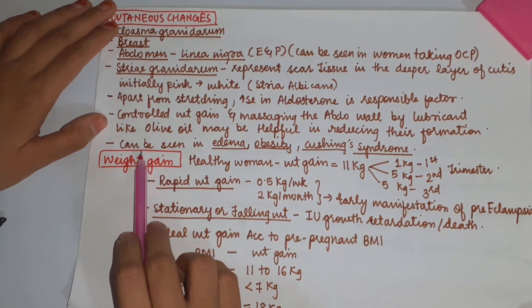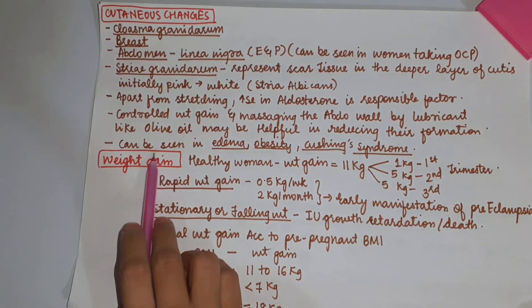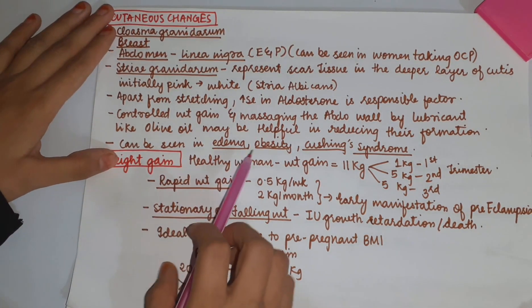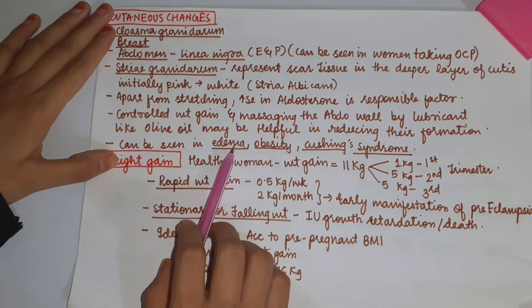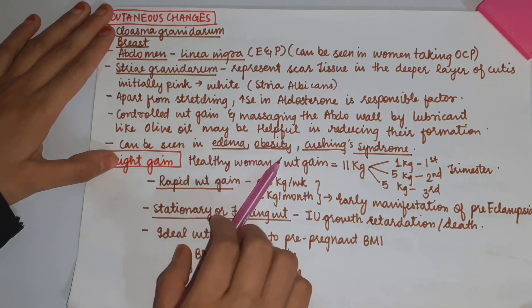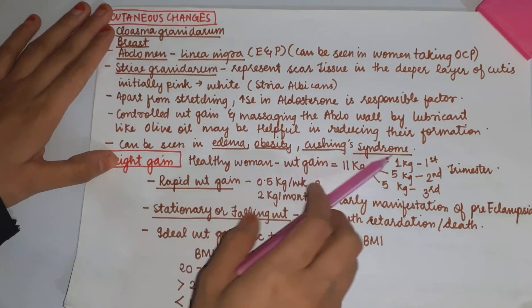Apart from pregnancy, striae can also be seen in persons having edema, obesity, and Cushing's syndrome.